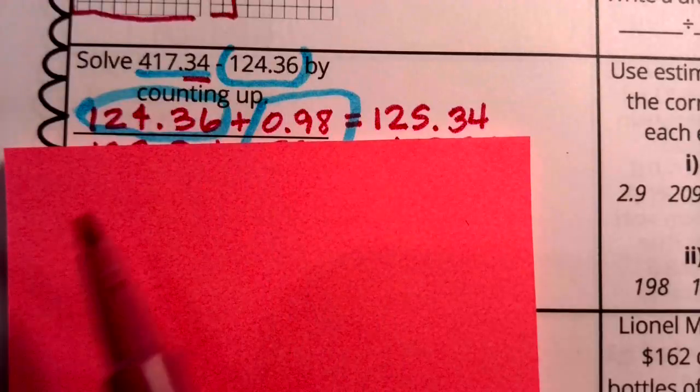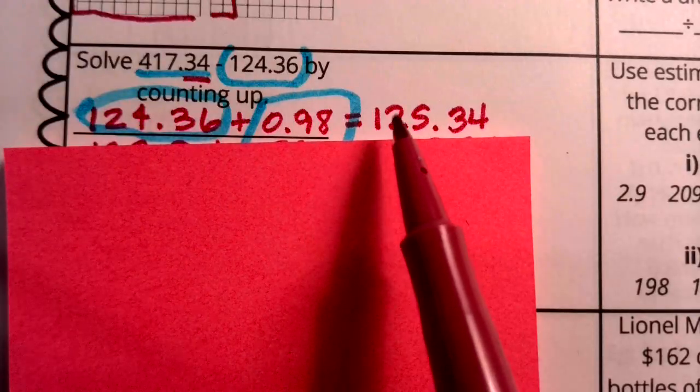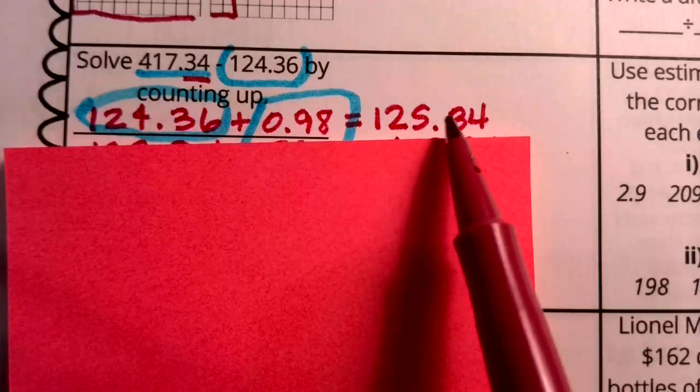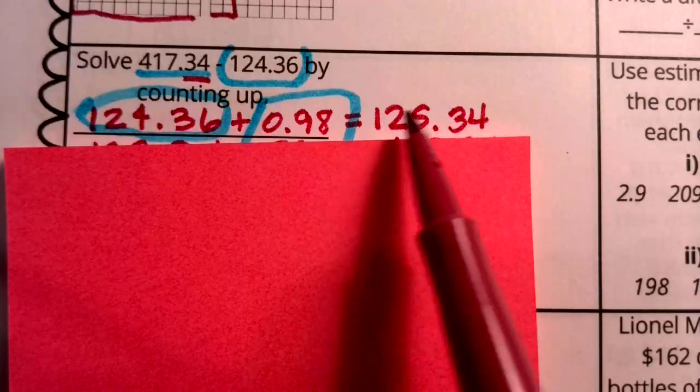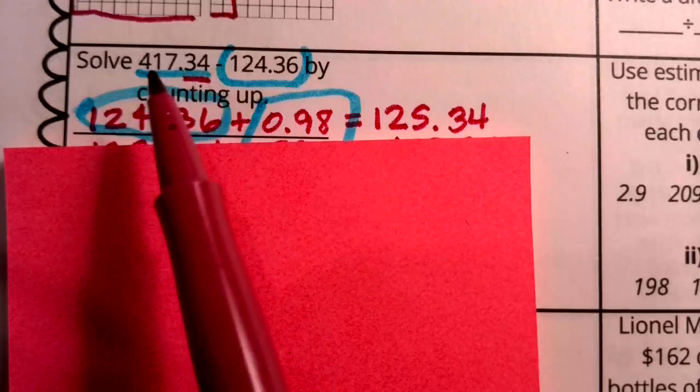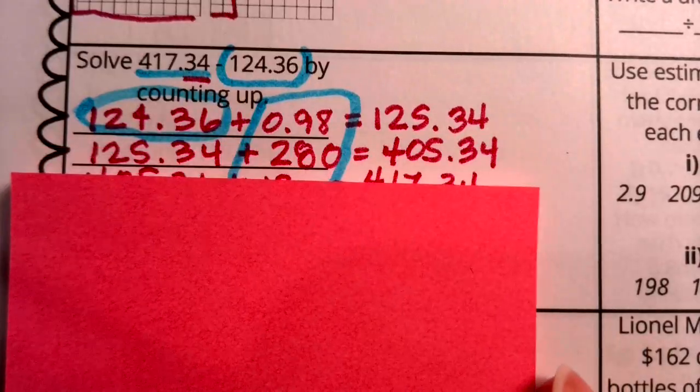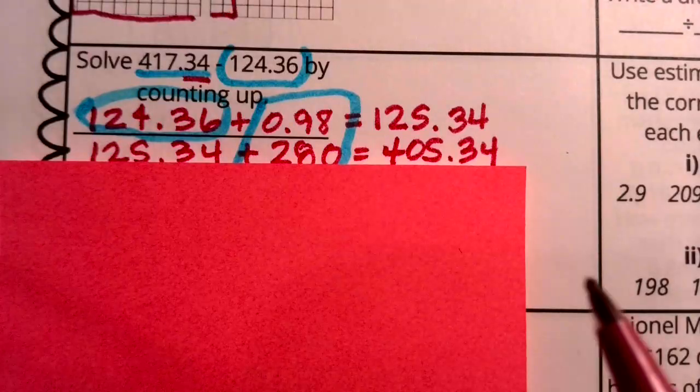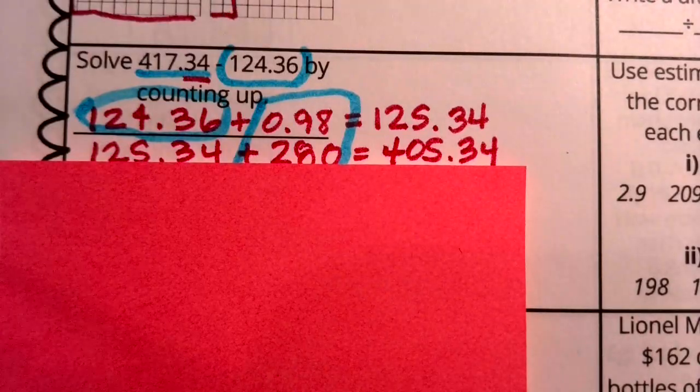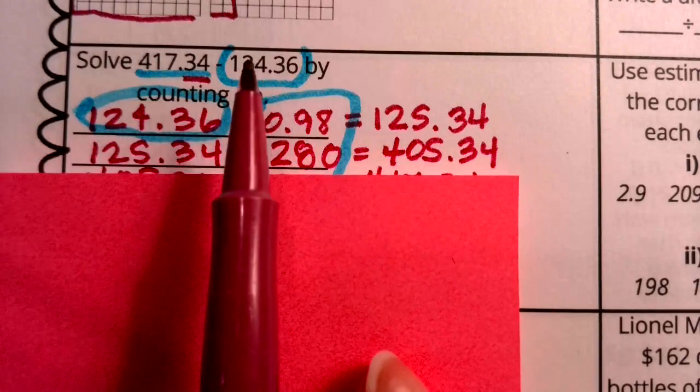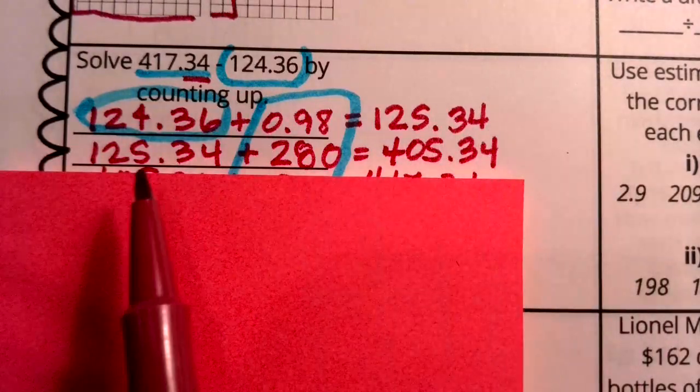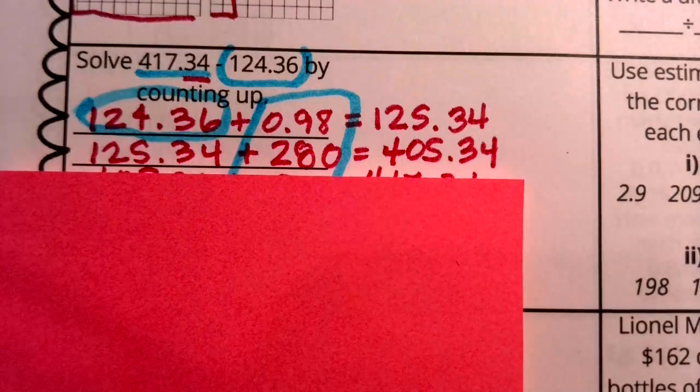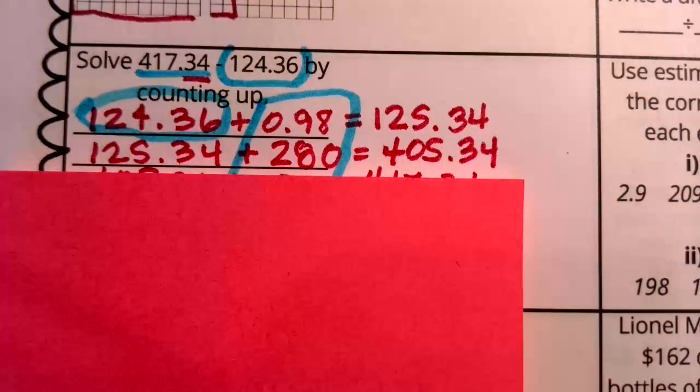Now I'm to that target, that decimal value, and now I can think a little bit, 125 and 34 hundredths, what do I see that I can add to get closer to this? My next add was 280. Now that didn't take me all the way to 417, but again, it was kind of a friendly add that I can do in my head. I had this number. I rewrote it here. I added 280 and that got me to 405 and 34 hundredths,